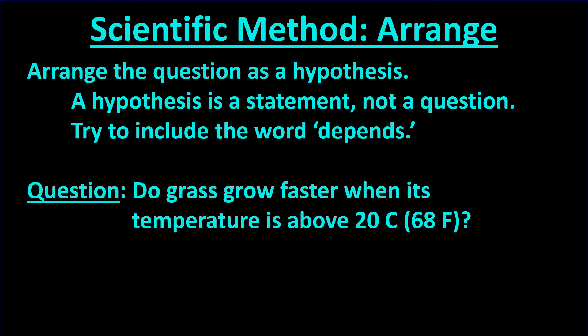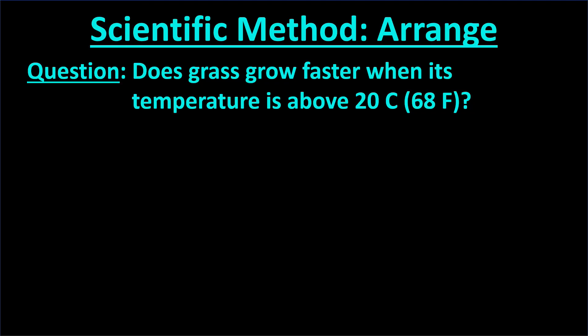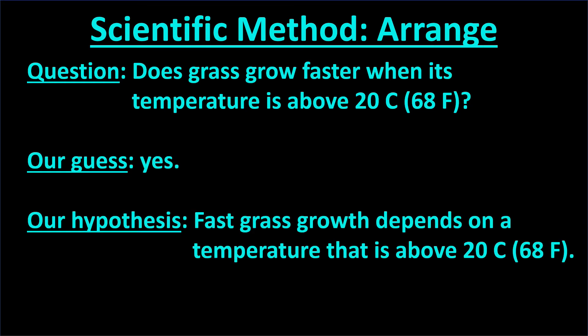In other videos in this mini-series, we will demonstrate why using the word 'depends' can be so helpful in designing an experiment and graphing the results. For now, let's rewrite the hypothesis with the word depends: fast grass growth depends on a temperature that is above 20 degrees Celsius. Here's a review of this step — to arrange the question as a hypothesis: first, we started with a question from the prior step that has a yes or no answer. Then we answered it with our best guess, and finally arranged the question as a statement with our best guess as the answer, including the word 'depends.'